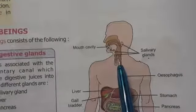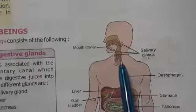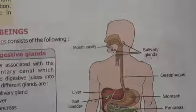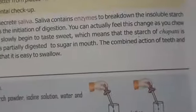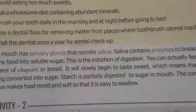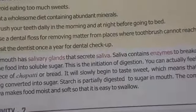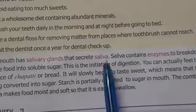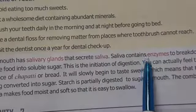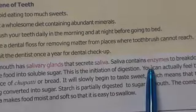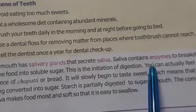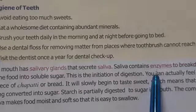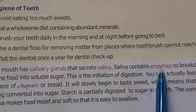What do these three pairs of salivary glands do? These three pairs of salivary glands secrete the saliva. The saliva comes in the mouth. The salivary glands will secrete the saliva. The saliva contains enzymes. What are enzymes? Enzymes are the chemical substances which make any process faster.